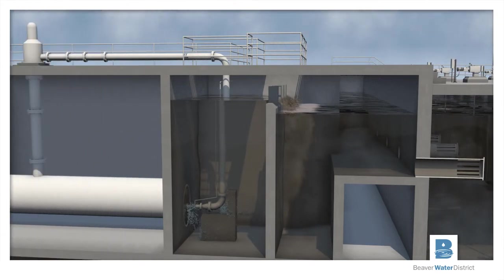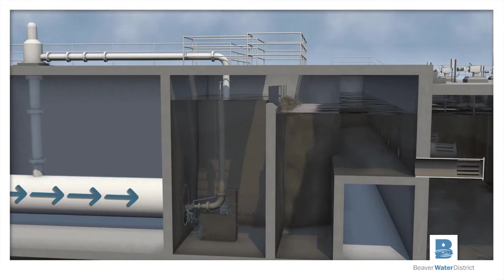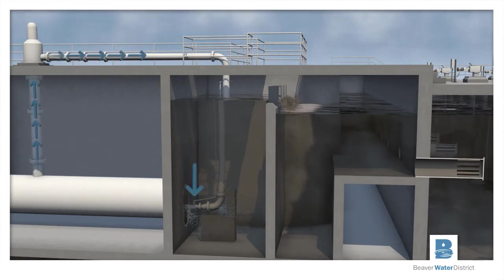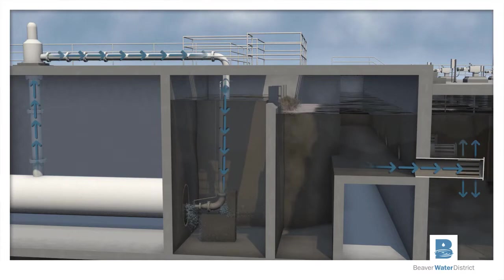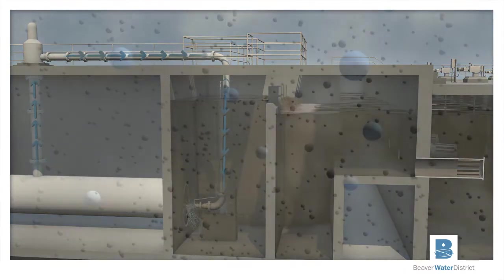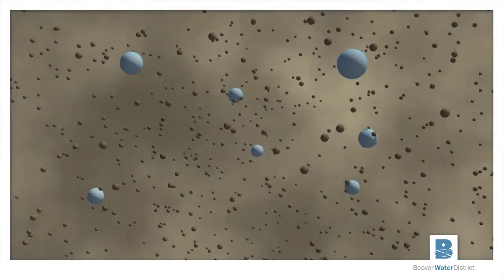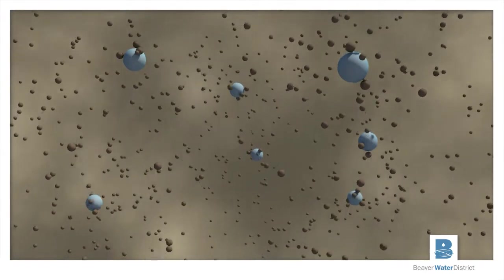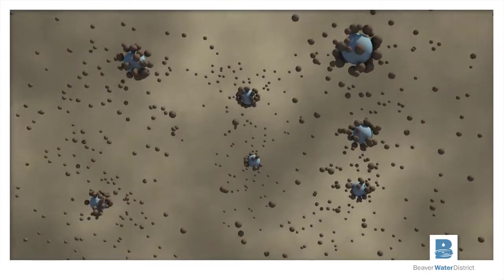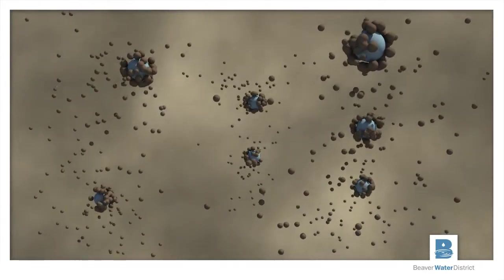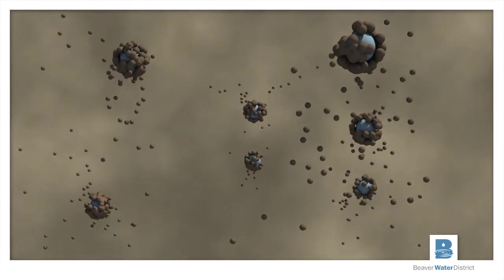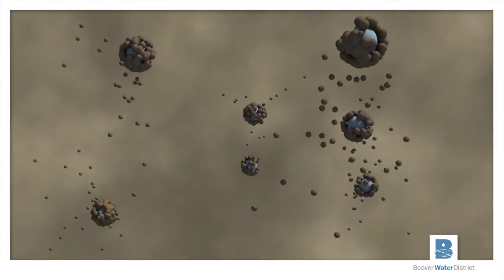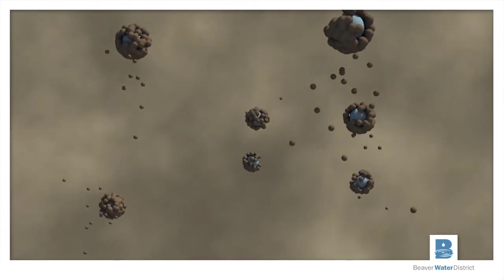Raw water from Beaver Lake enters the flash mix basin where a coagulant is added. The coagulant is mixed very rapidly with the incoming raw water. The chemical properties of the coagulant cause the dirt particles in the water to coagulate, or clump together, to form larger particles known as floc.